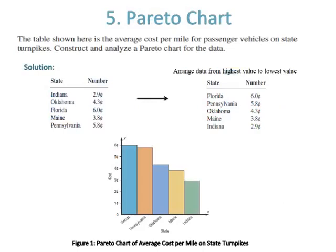Number five is Pareto chart. The table shows the average cost per mile for passenger vehicles on state turnpikes. Construct and analyze a Pareto chart by arranging data from highest to lowest value. State names are on the x-axis and cost on the y-axis. The Pareto chart shows that Florida has the highest cost per mile, more than twice as high as the cost for Indiana.